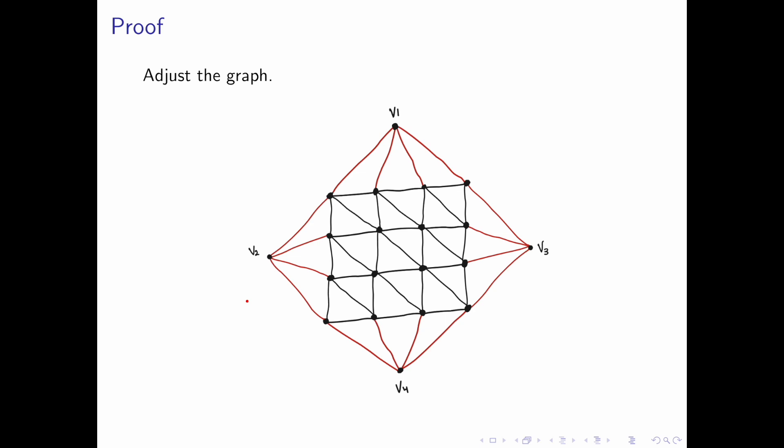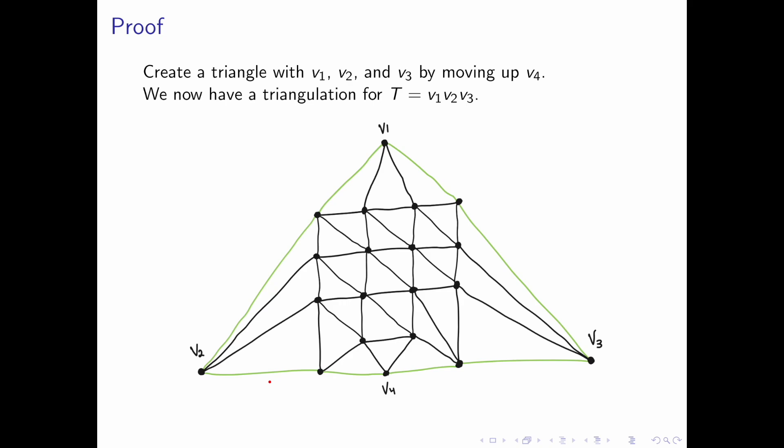We will adjust the graph a bit. And then we will move v2 down, v3 down, and we will move v4 up a little bit. The purpose is so that our graph looks like a triangle with edges colored in green as shown here. We now have a triangulation for T. We have divided T into multiple triangles.